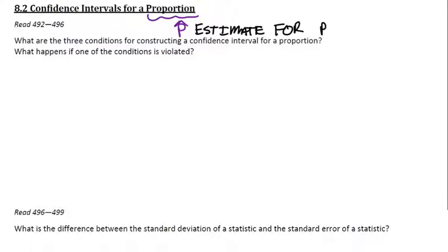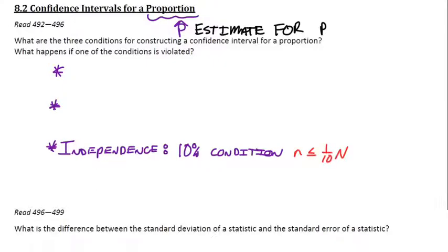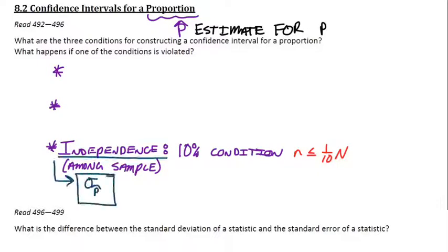So to construct this confidence interval, there are three conditions. The first one would be the independence condition, which we know to be the 10% condition, which means when we're sampling without replacement, our sample size can't take up more than 10% of the population size. So that means we'll have independence among our sample, and for us, that verifies the standard deviation formula.